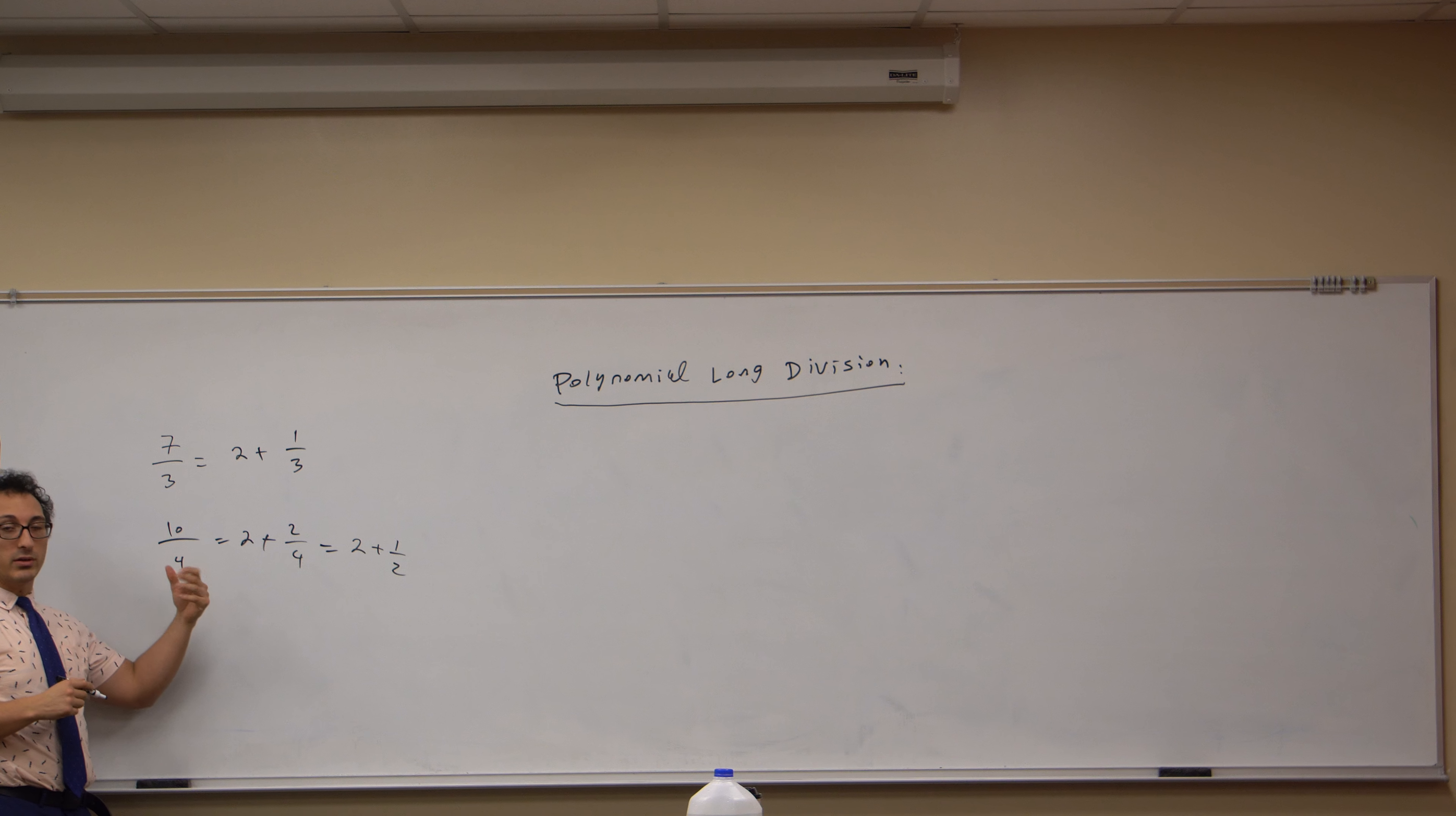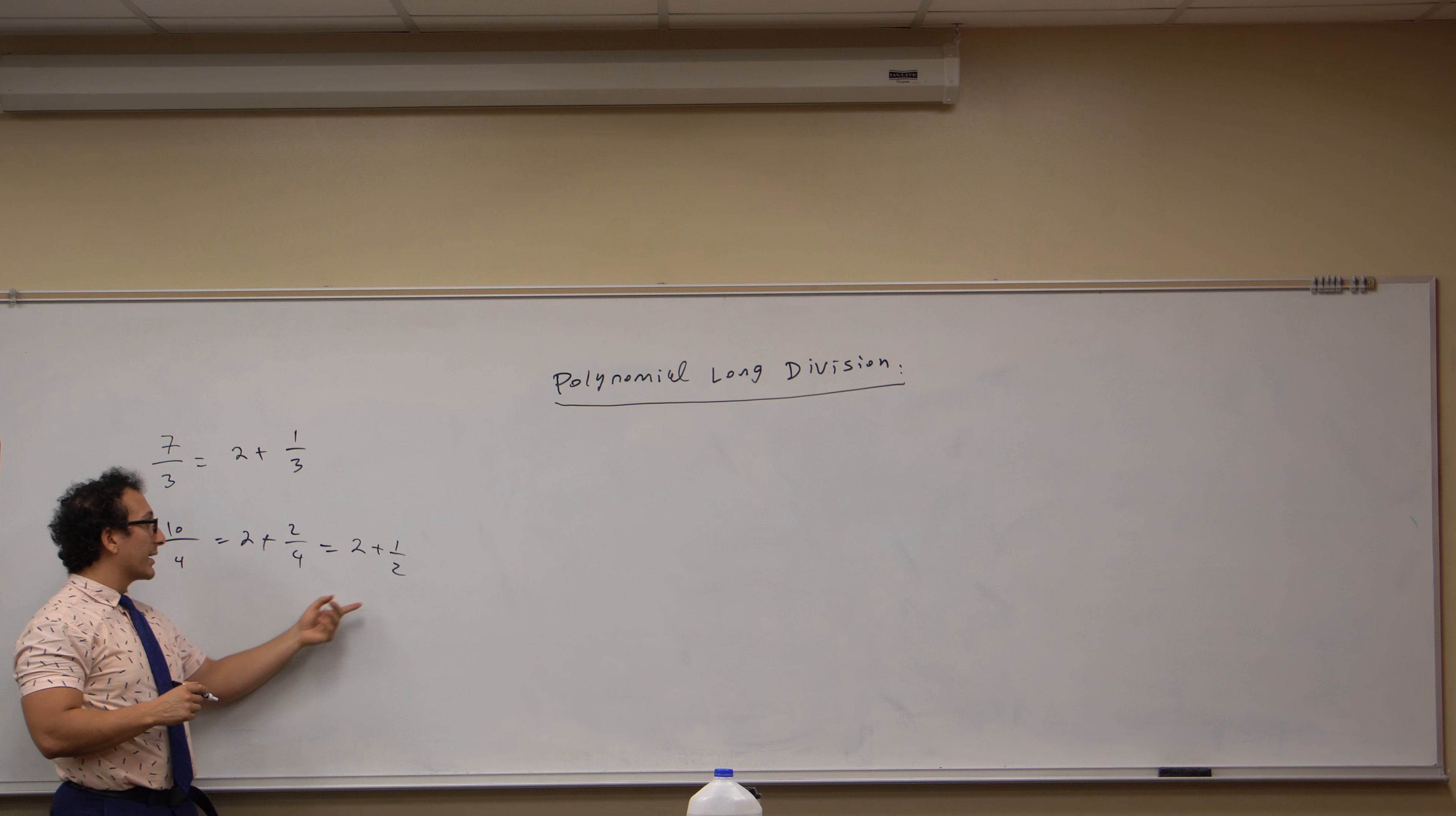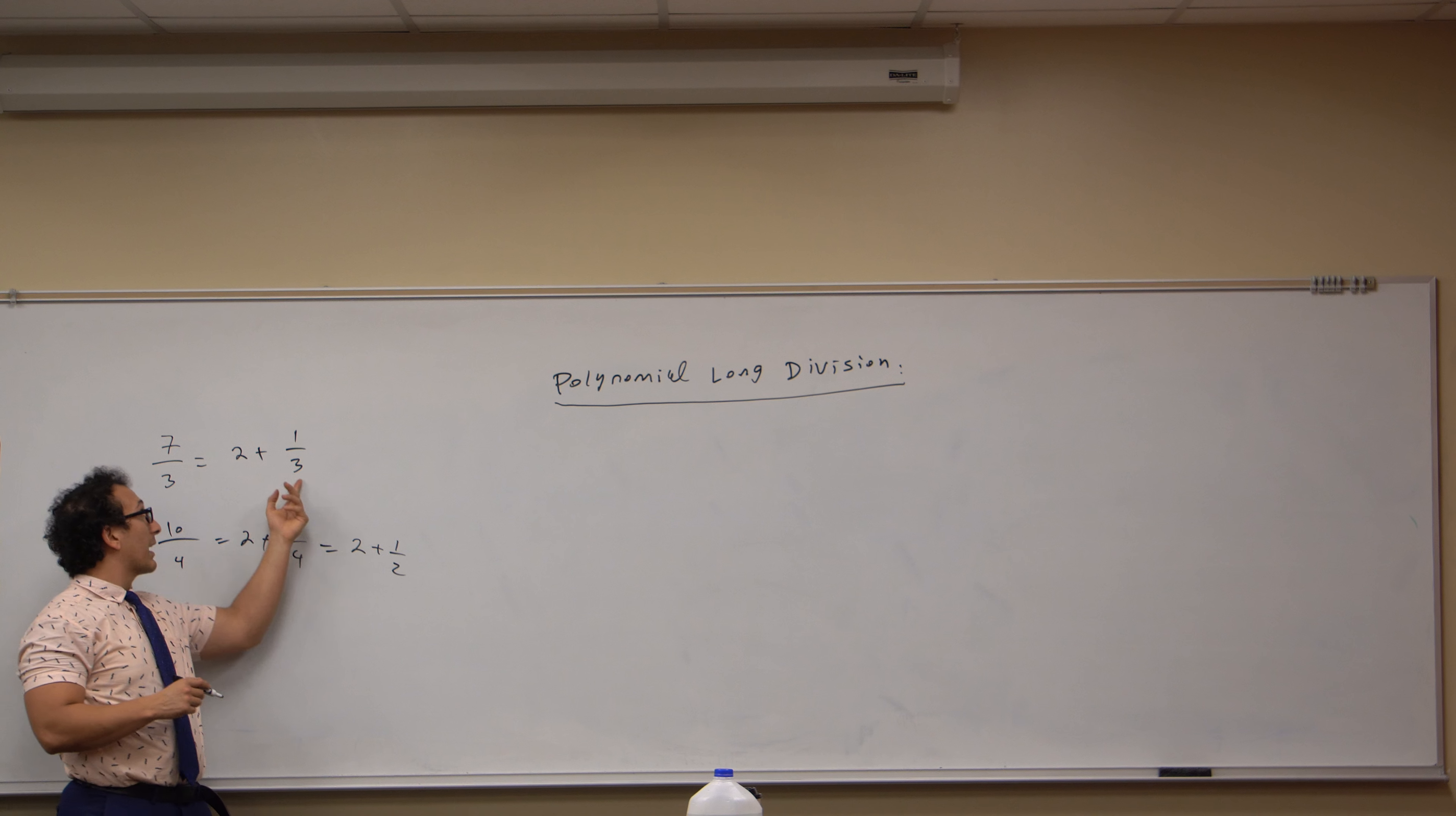So recall that once you're done dividing the denominator into the numerator, if there's a remainder, you have to divide that by the pre-existing value. The same thing happens for polynomials.